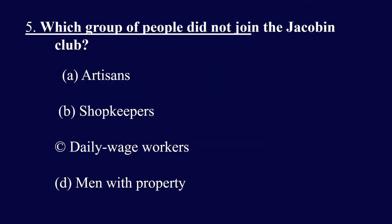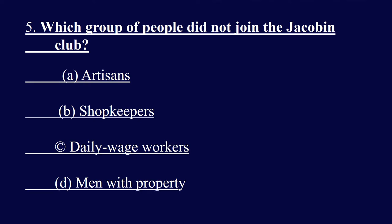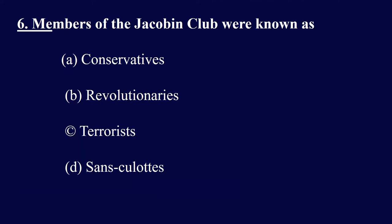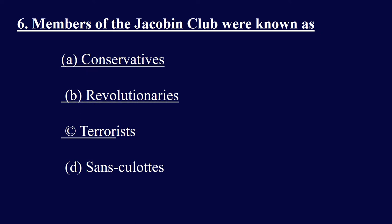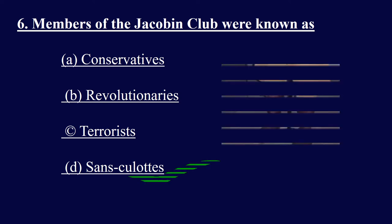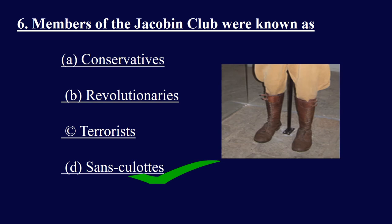Question five: Which group of people did not join the Jacobin club? Options: A) artisans, B) shopkeepers, C) daily wage workers, D) men with property. The right answer is D, men with property — meaning wealthy people did not join the Jacobin club. Question six: Members of the Jacobin club were known as — options: A) conservatives, B) revolutionaries, C) terrorists, D) sans-culottes. The right answer is D, sans-culottes. Sans-culottes means people without knee breeches — knee breeches being the long boots worn by high society people.